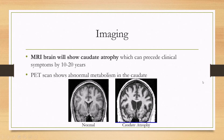On imaging, the MRI brain will show caudate atrophy, which can precede clinical symptoms by 10 to 20 years. Here on this MRI we see a normal-sized caudate, which typically bulges into the ventricle in a convex shape. However, in Huntington disease there can be caudate thinning and decreased volume, resulting in the ventricle looking more like a line or concave shape. PET scan can also show abnormal metabolism in the caudate.